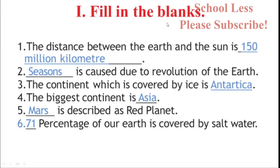Fill in the blanks: The distance between the Earth and the Sun is 150 million km. Seasons are caused due to the revolution of the Earth. The continent covered by ice is Antarctica. The biggest continent is Asia. Mars is described as the red planet. 71% of our Earth is covered by salt water.